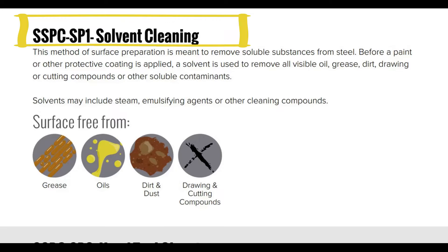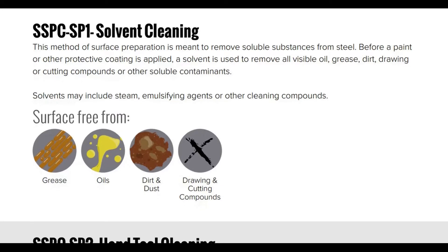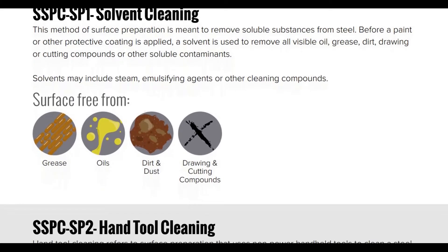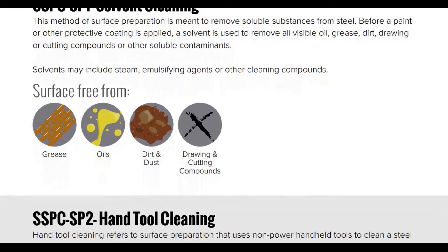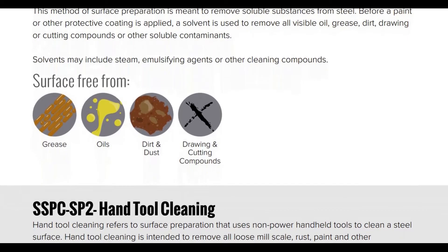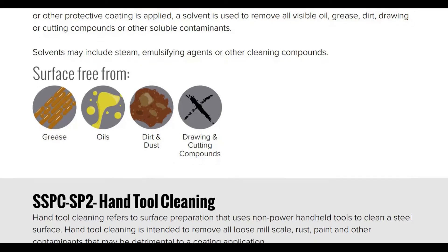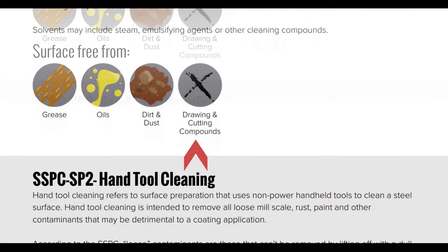SSPC-SP1 Solvent Cleaning: this method of surface preparation is meant to remove soluble substances from steel. Before a paint or other protective coating is applied, a solvent is used to remove all visible oil, grease, dirt, drawing or cutting compounds, or other soluble contaminants. Solvents may include steam, emulsifying agents, or other cleaning components, leaving the surface free from grease, oil, dirt, and drawing and cutting compounds.